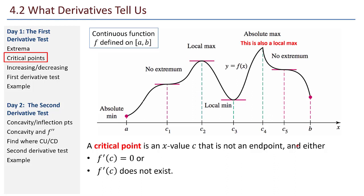We do this first by recalling what a critical point is. A critical point is an x value, c, that is not an endpoint and either f prime of c equals 0, or f prime of c does not exist. Looking at this on the graph: c1, c2, c3, c4, c5 are the critical points. At c1, c2, c3, and c5 the derivative is 0. At c4, the derivative doesn't exist.